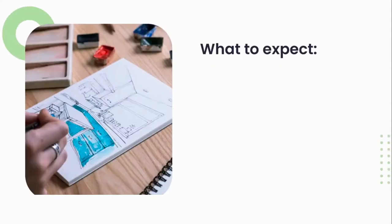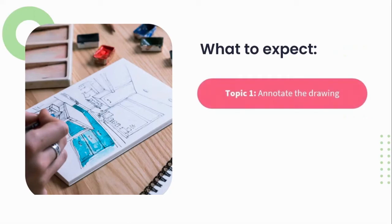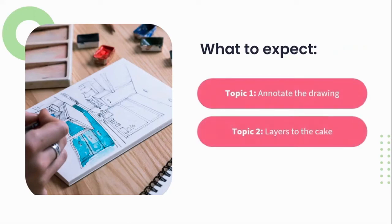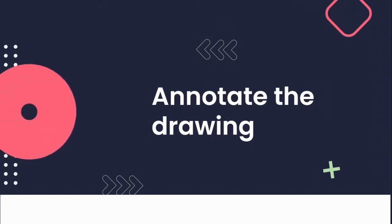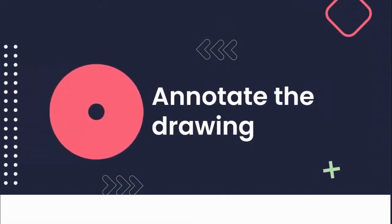From here, let's take a look at what we have lined up for today's lesson. Topic one: we are going to learn how to annotate the drawing. Topic two: we are going to layer the cake — we're going to add layers to our drawing. And topic three: we're going to put all of this together as we look at how to create our very own drawing.